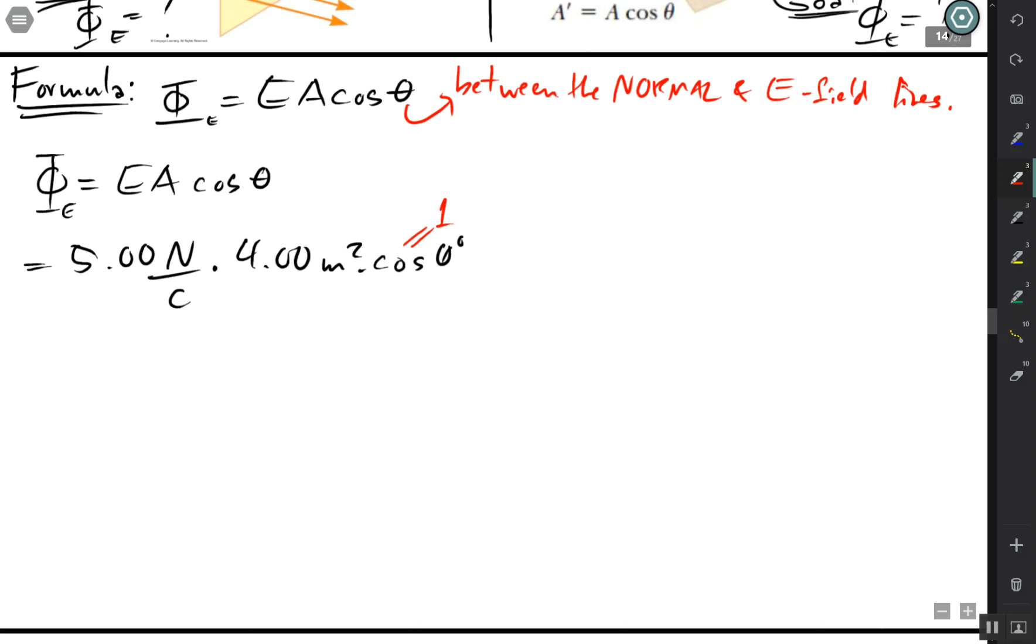How much? One. And so I simply get electric field strength of five times four—how many sig figs should be? Three. And this is the unit for electric field flux. That's pretty much it for this end.